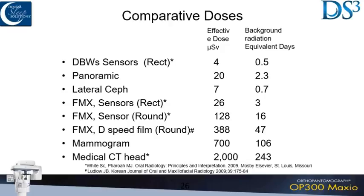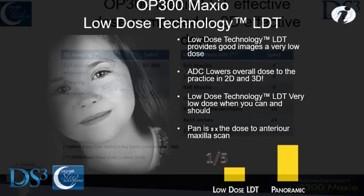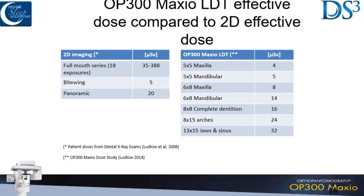None of us hesitate to take pans or full mouth series. If you look at this, with a full mouth series — very few clinicians using rectangular collimation, most using round — your digital setting is still 128 micro sieverts. When you look at cone beam with low-dose protocols, you can get down as low as a bitewing. Comparing cone beam to pans, the story's really changed in the last couple of years. For airway specifically, 32 micro sieverts compared to a full mouth series at 128 — it's night and day.